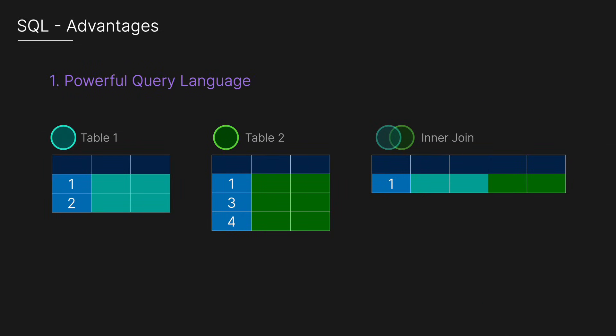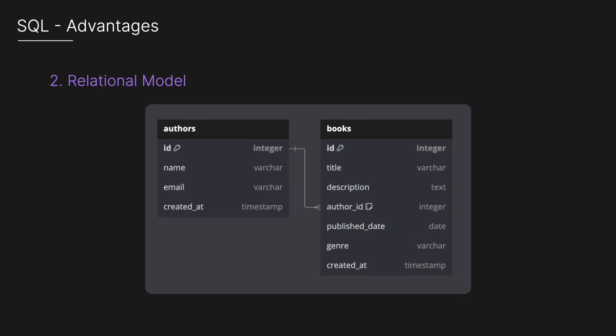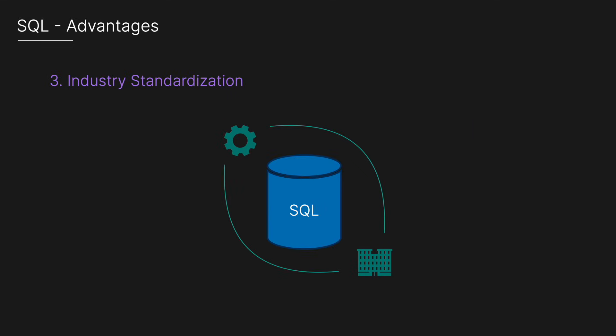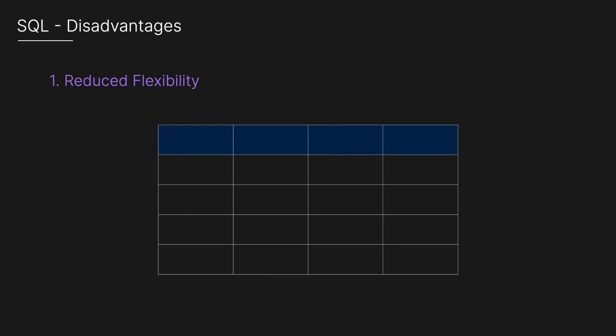The advantages include a powerful query language — SQL allows for complex queries, joins, and aggregations — as well as data integrity, providing strong consistency and well-defined relationships. And finally, industry standardization: it's widely used with a vast ecosystem and community support.